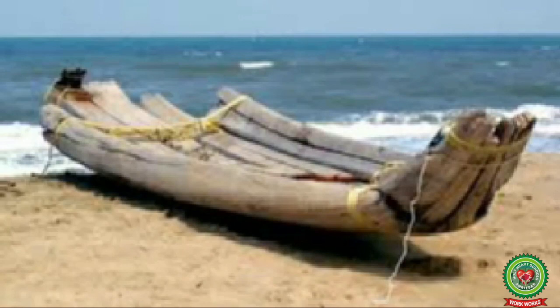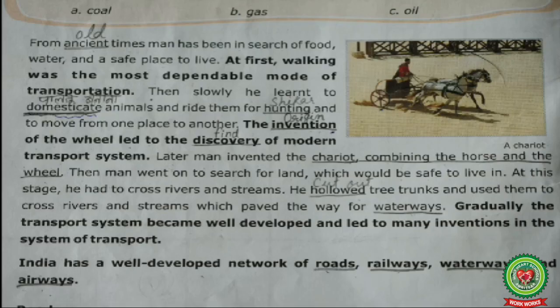Transport through water started. Now, the next paragraph: 'India has a well-developed network of roads, railways, waterways and airways.' Mark roads, railways, waterways and airways as these are terms of today's topic. We have already done the meaning of these in the terms section.